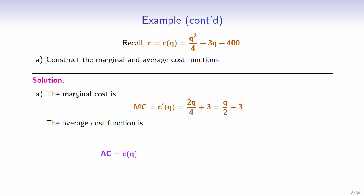Recall that average cost is just total cost divided by q. So the average cost function is q squared over 4 plus 3q plus 400, all over q. This equals q over 4 plus 3 plus 400 over q.